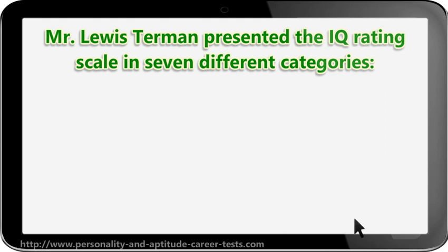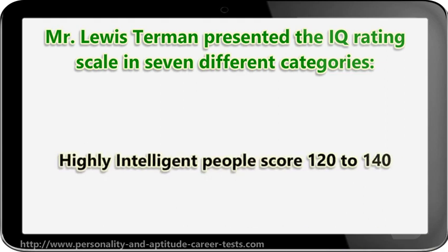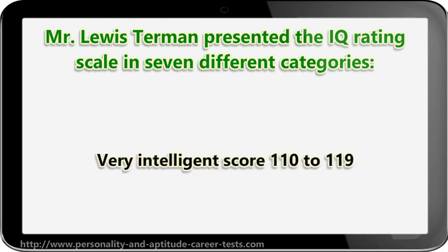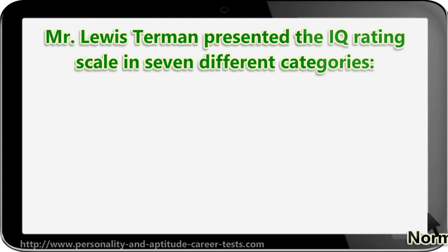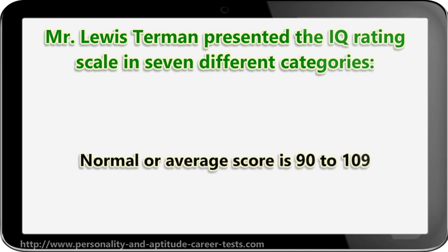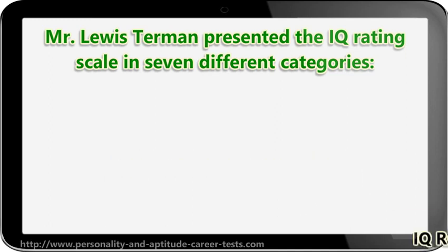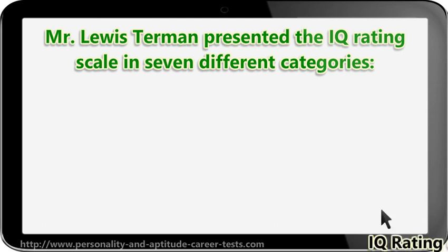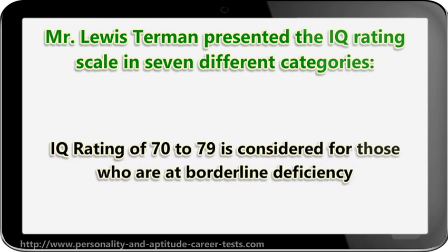Highly Intelligent People: Score 120 to 140. Very Intelligent: Score 110 to 119. Normal or Average: Score is 90 to 109. IQ Rating of 80 to 89 is equated with dullness.